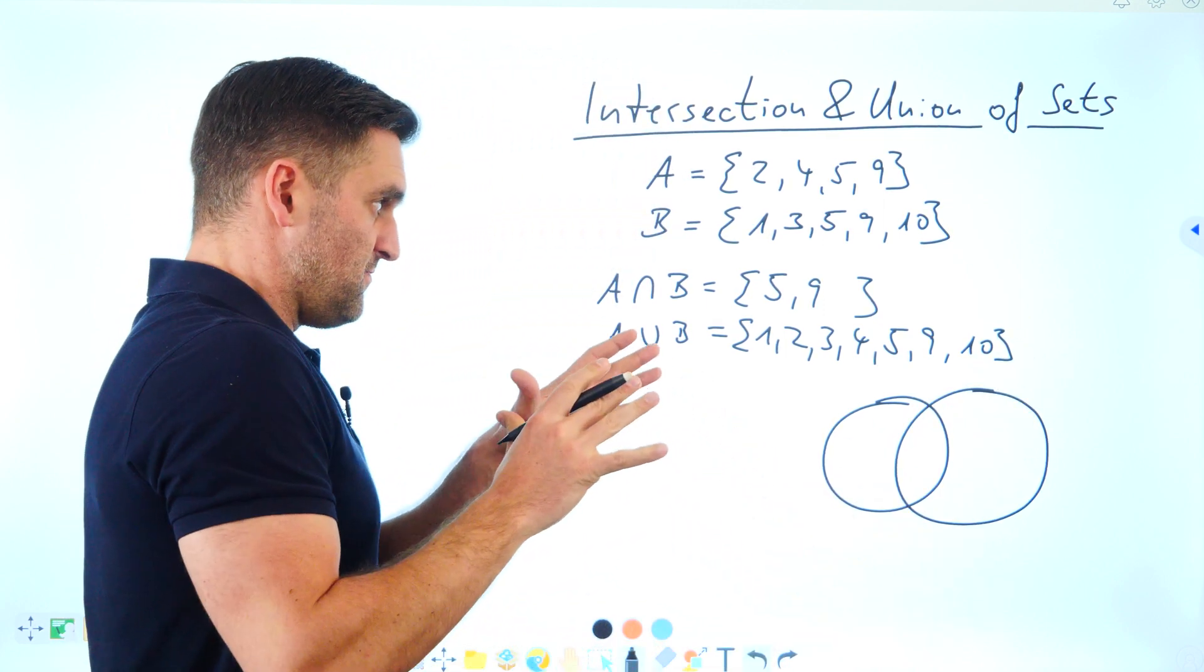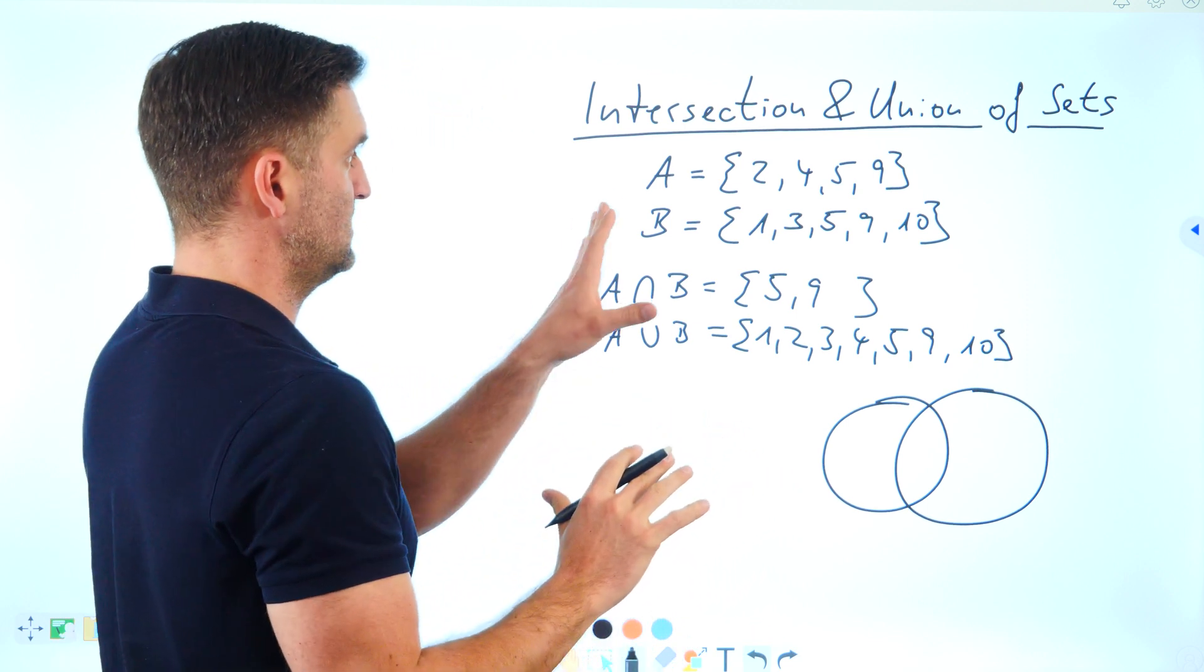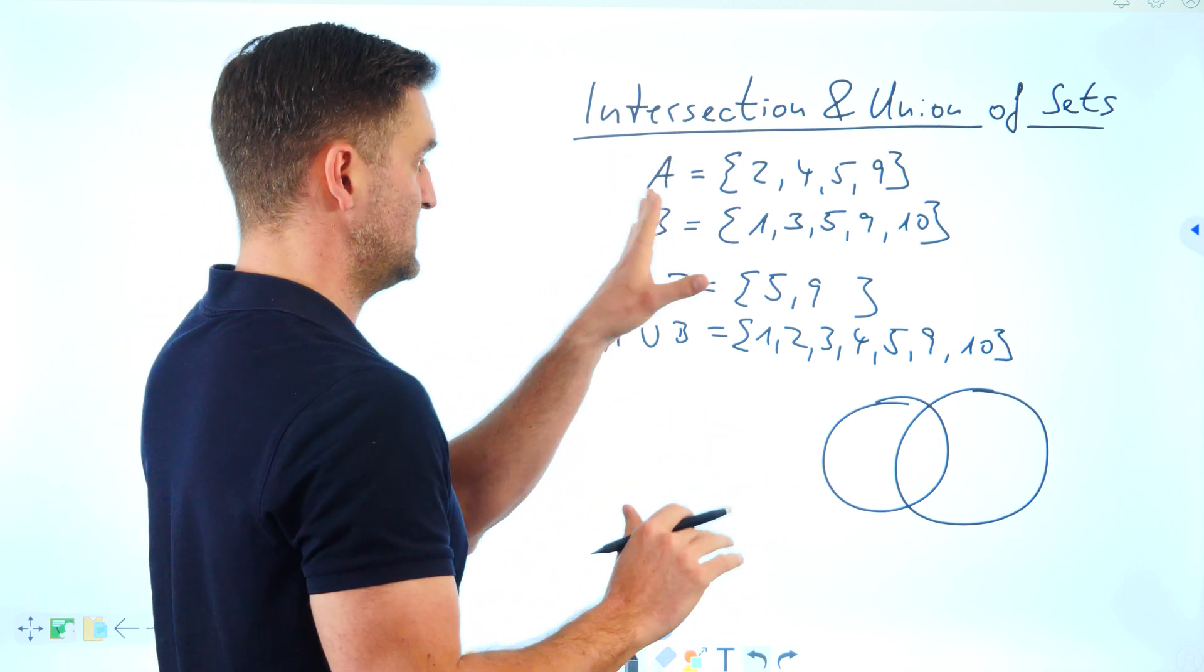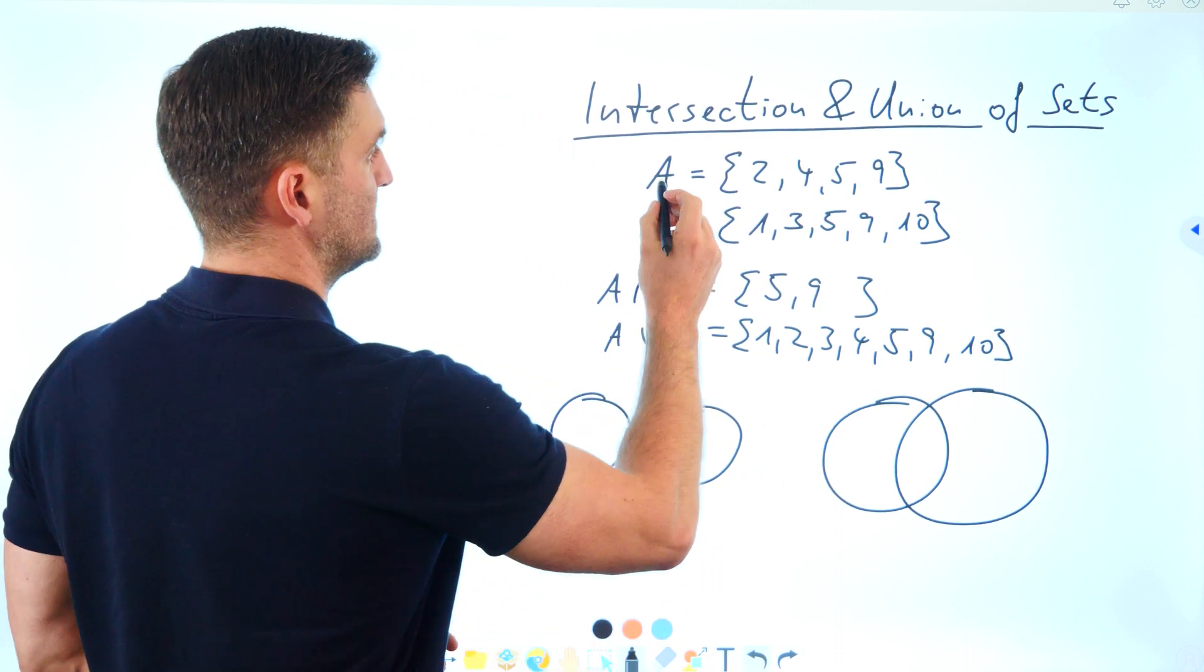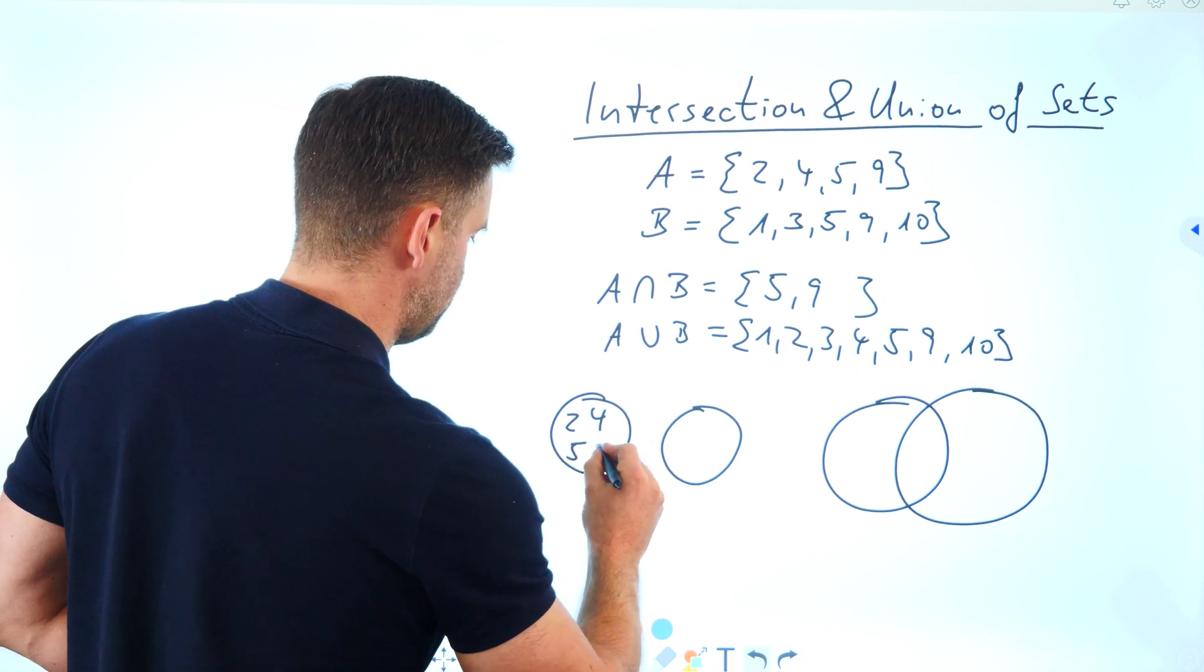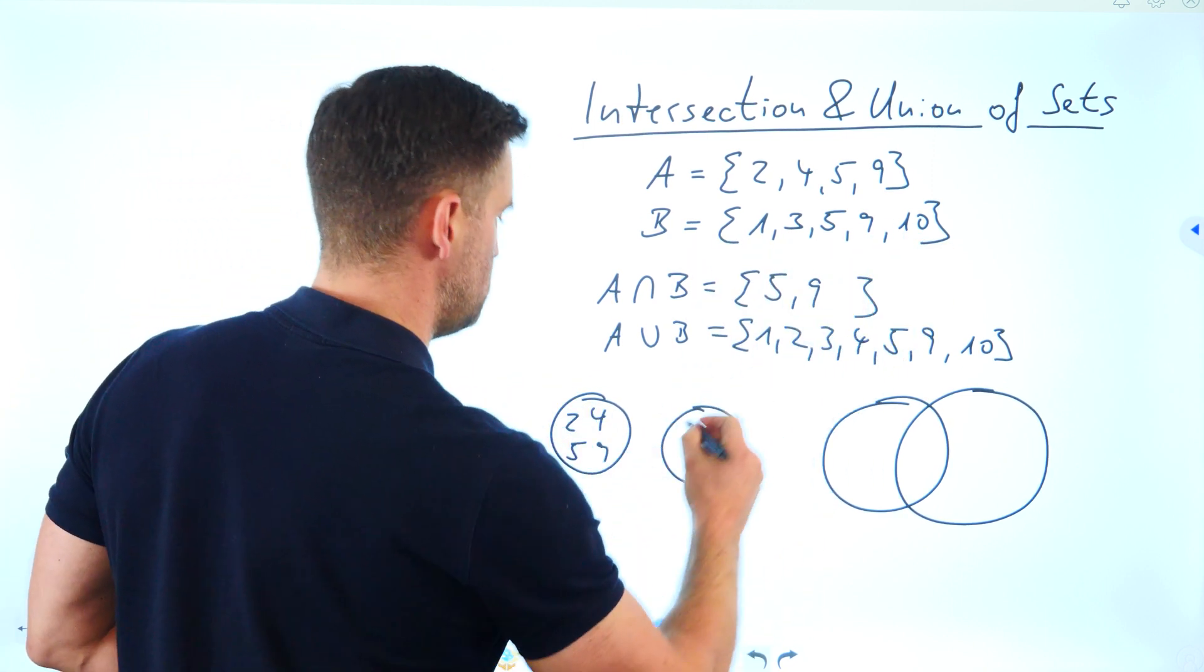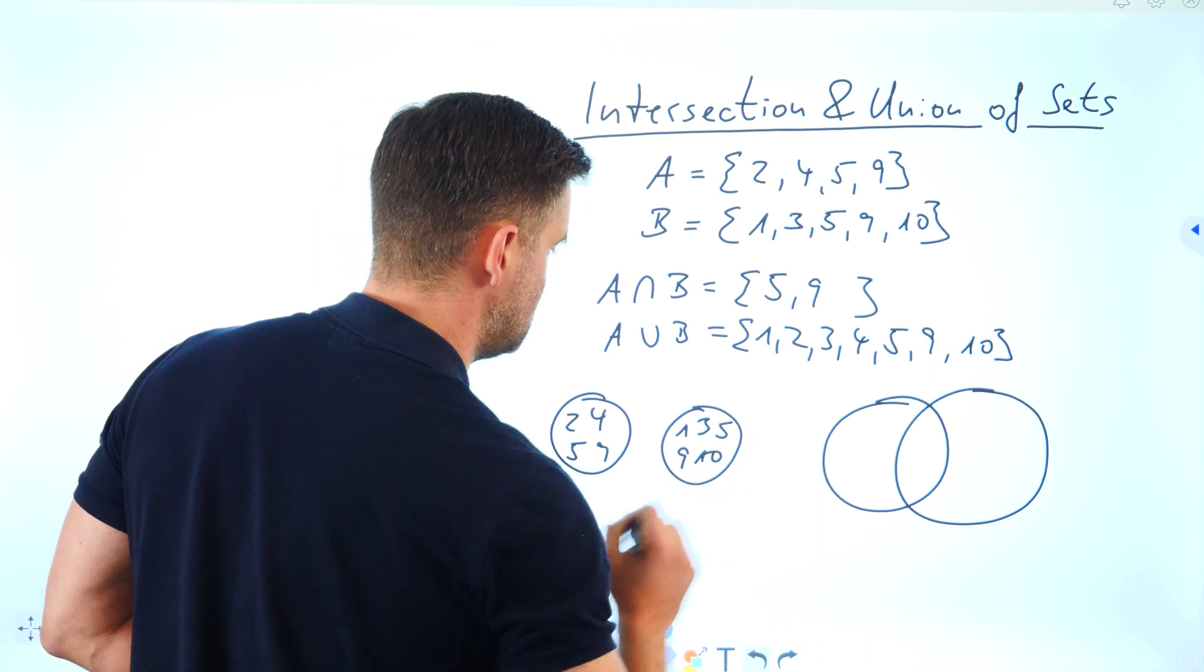To visualize it via a Venn diagram, first we draw set A and set B in separate circles. A is 2, 4, 5, and 9. B would be 1, 3, 5, 9, and 10.